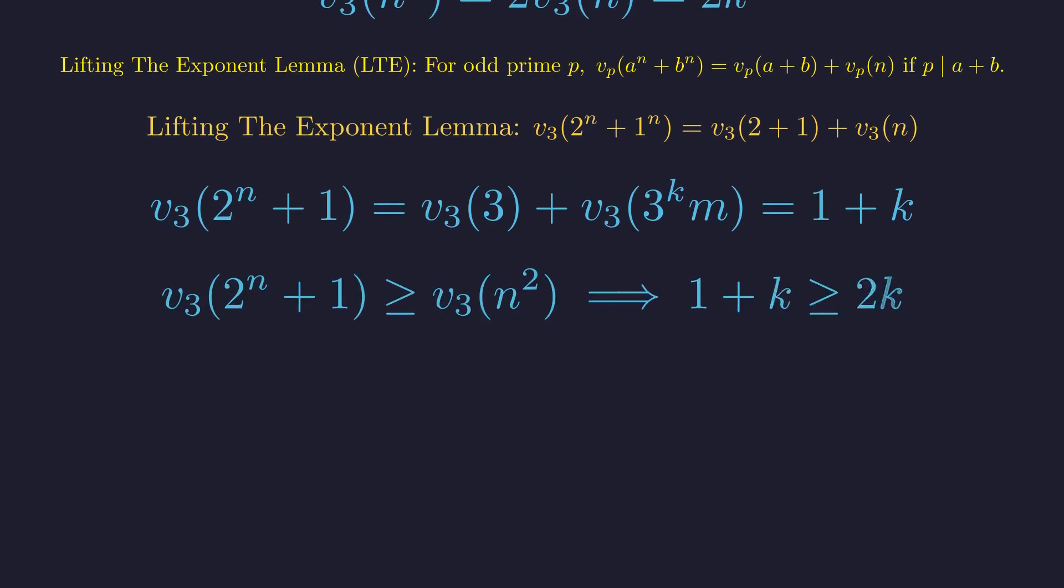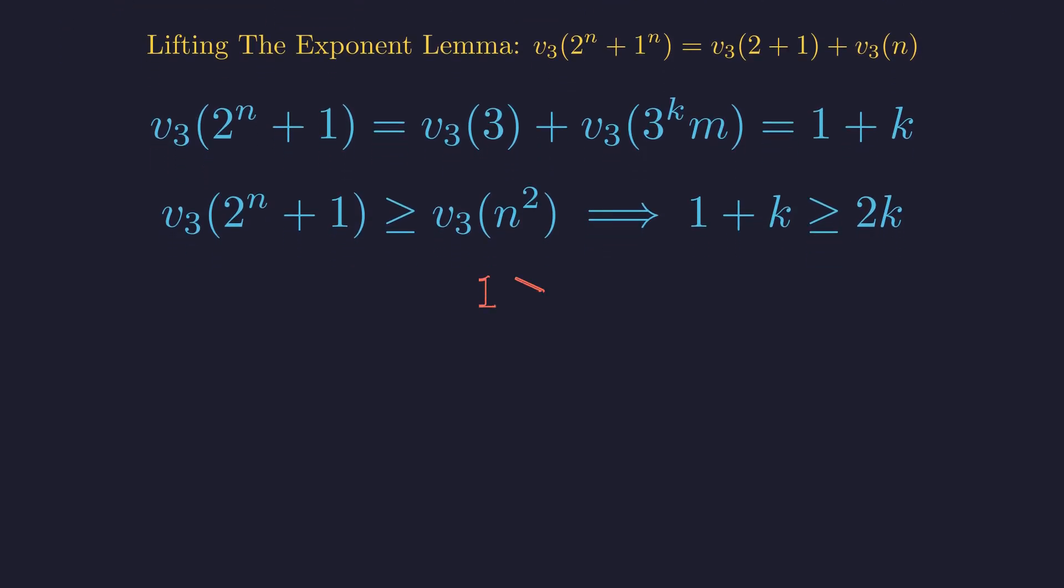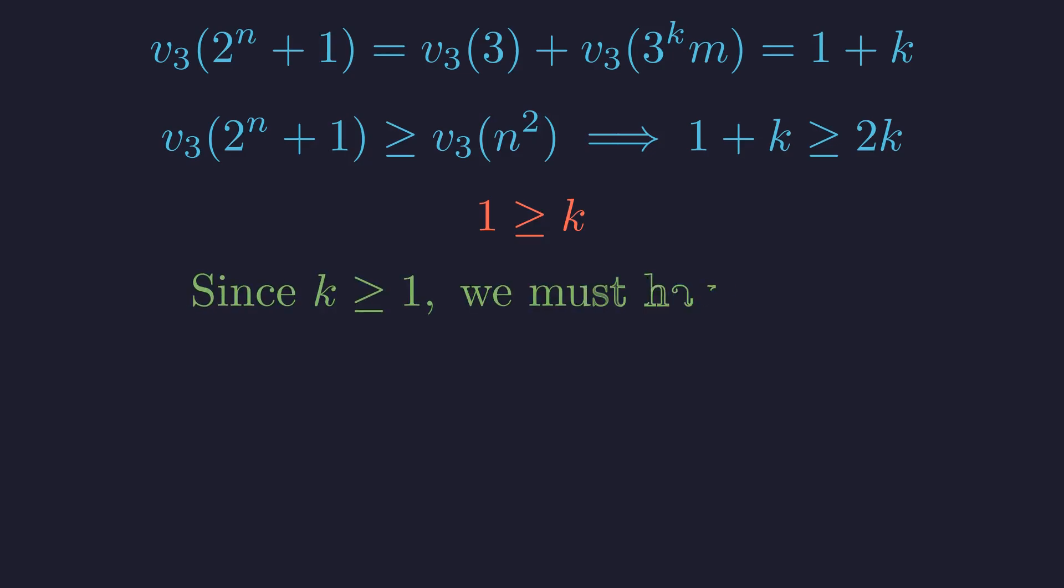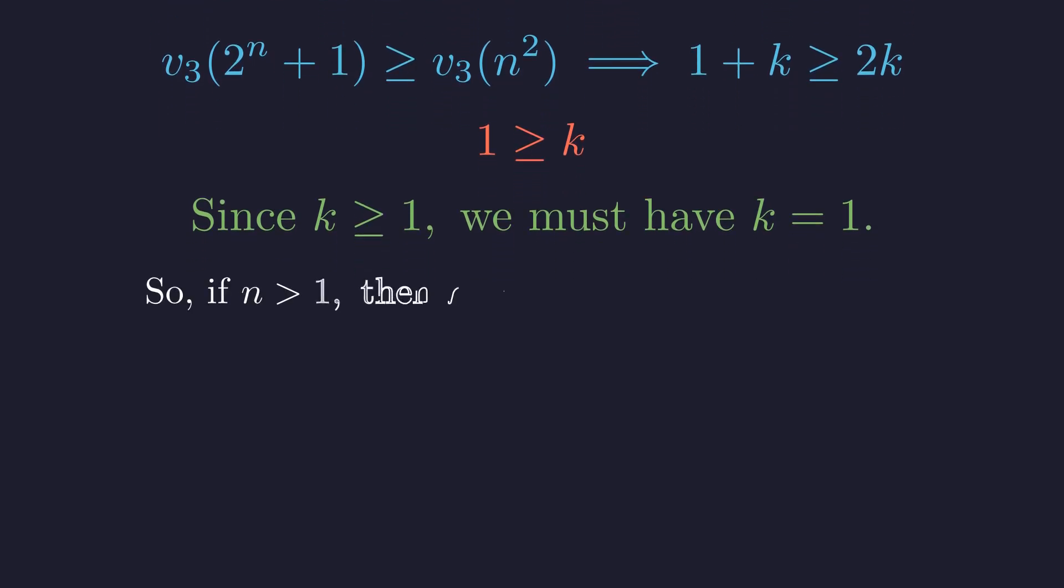The number of factors we found, 1 plus k, must be greater than or equal to the number of factors required, 2k. This gives us our critical inequality. Solving this leaves us with k being less than or equal to 1. Since k must also be at least 1, there's only one possibility. k must be exactly 1. This powerfully constrains our solution. Any solution n greater than 1 must be 3 times some number m, where m is not a multiple of 3.